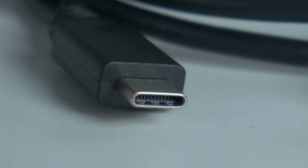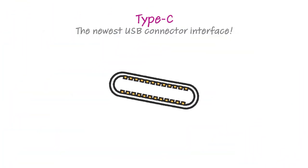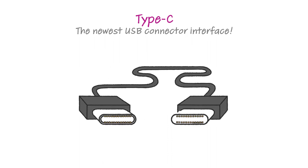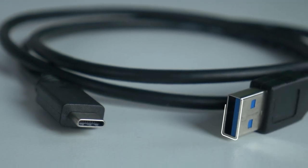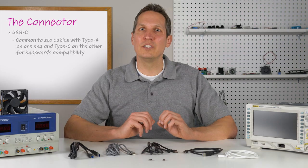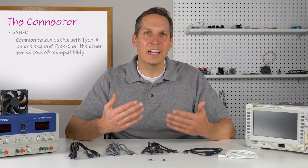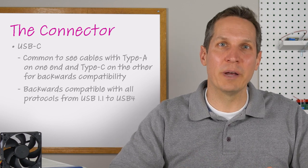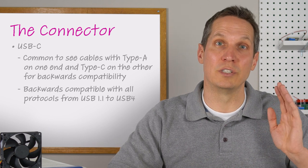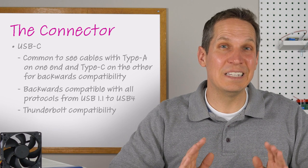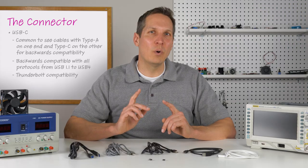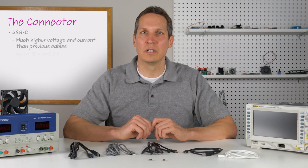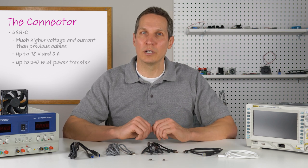Type C is the newest USB physical connector interface. It has a reversible and symmetrical design that can be inserted with either side up and can also be plugged into any USB-C device using either end of the cable. As they're being introduced, it is very common to see Type A on one end and Type C on the other for backwards compatibility. While this is the first time the physical connectors aren't backwards compatible with each other, they are backwards compatible with all protocols — from USB 4 to the oldest 1.1 signals — and are even compatible with Thunderbolt signals. Type C allows up to 48 volts and 5 amps, giving up to 240 watts of power transfer.